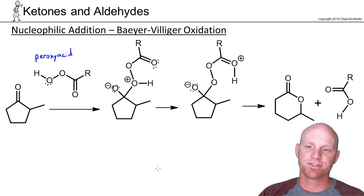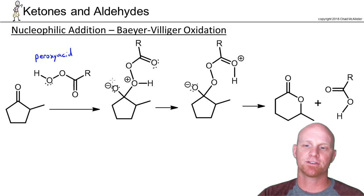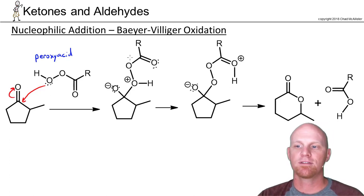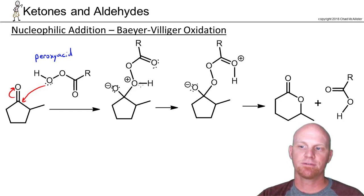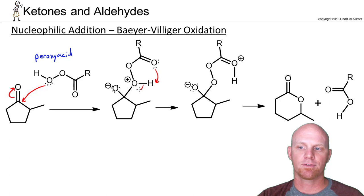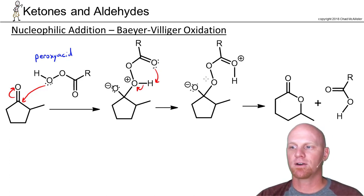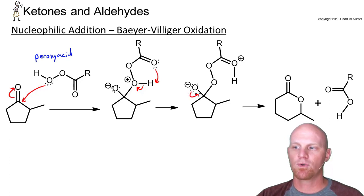In the mechanism, the first step is just nucleophilic addition. It's the outermost oxygen of the peroxy acid that's going to do the nucleophilic addition — it attacks the carbonyl, pushing the pi electrons up to the oxygen, and we get this intermediate. This oxygen is proximal to this hydrogen, and that hydrogen on the positively charged oxygen is fairly acidic, so we're just going to deprotonate in a kind of intramolecular deprotonation.